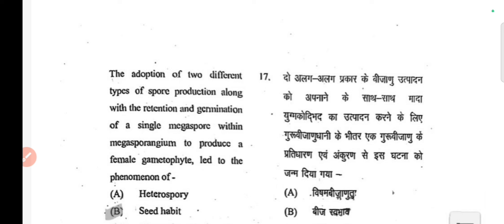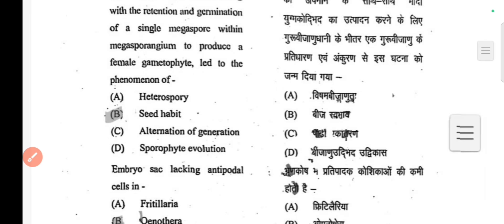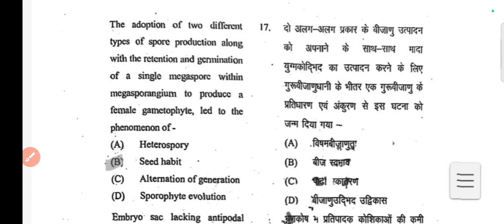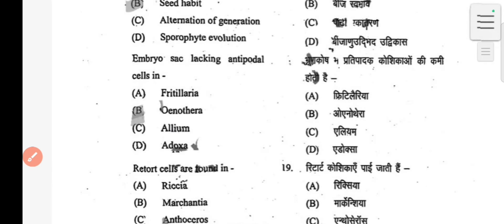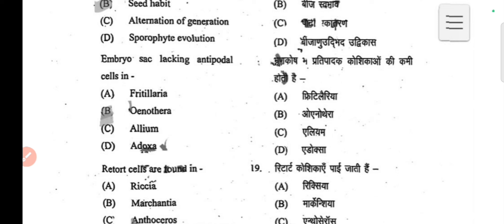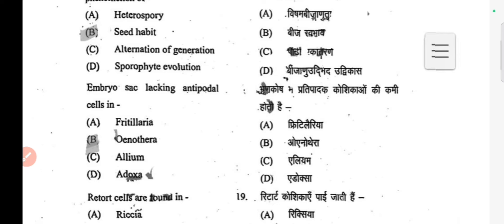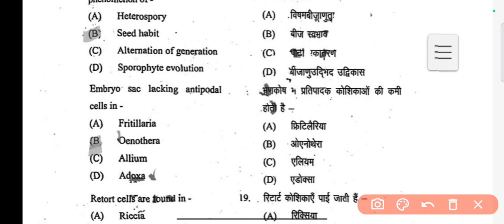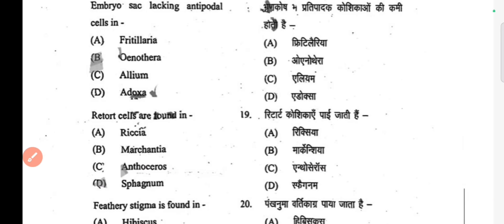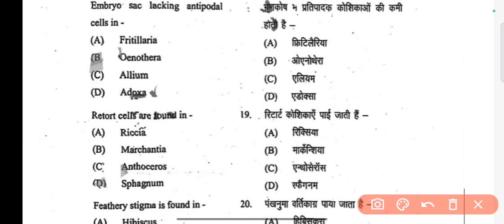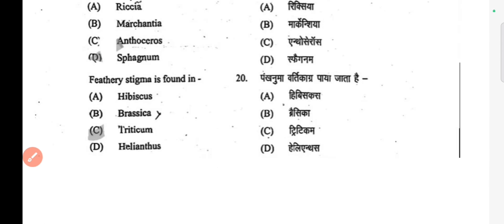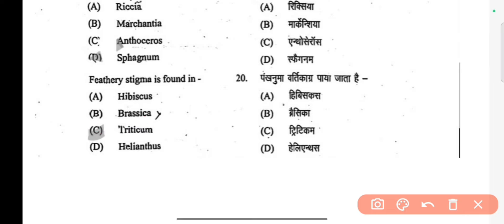Next question: production of two different types of spores, with the retention and germination of a single megaspore within the megasporangium to produce a female gametophyte, leads to a phenomenon called seed habit.